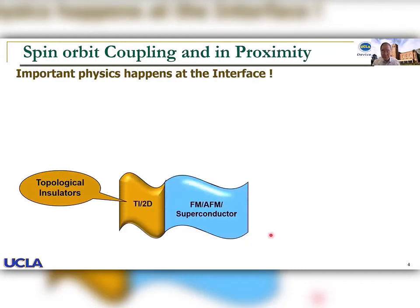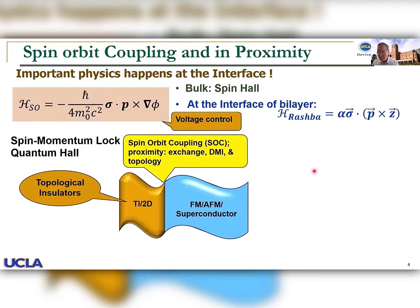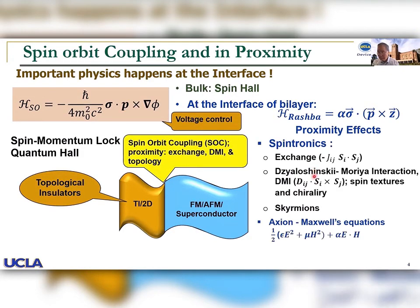As you know, most important physics happens at the interface. For example, in topological insulators at interfaces with different materials, we have spin-orbit coupling which results through spin-momentum locking, also showing the quantum anomalous Hall effect. The spin-orbit interaction, or spin-orbit coupling, produces at the interface a proximity effect due to exchange.